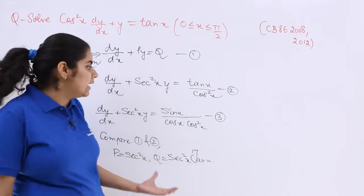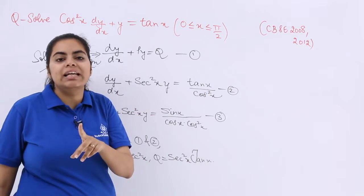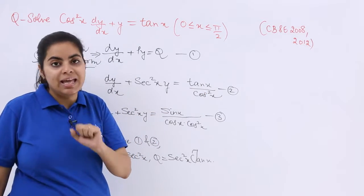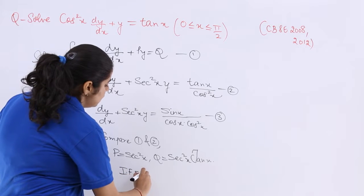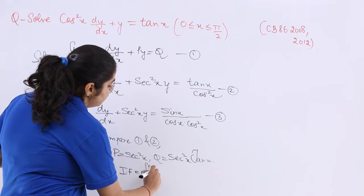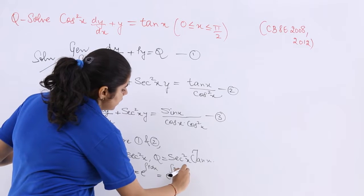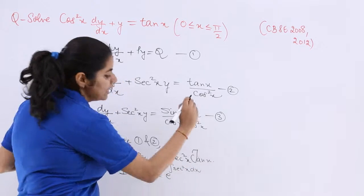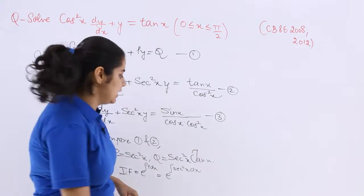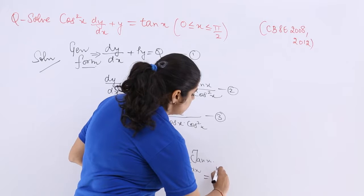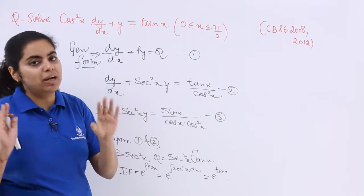The next step is to find the integrating factor before multiplying the equation. The integrating factor is e raised to the power of ∫P dx, which is e raised to the power of ∫sec²x dx. Since the integration of sec²x is tan x, the integrating factor is e^(tan x).